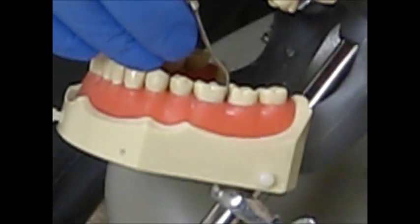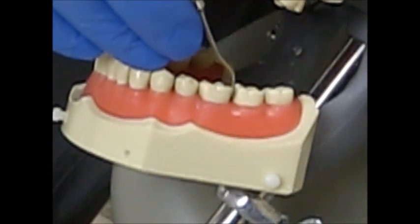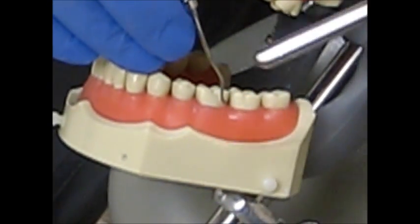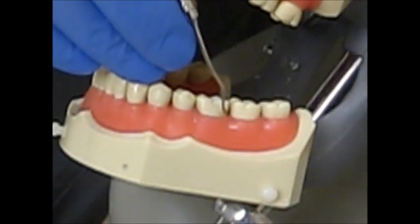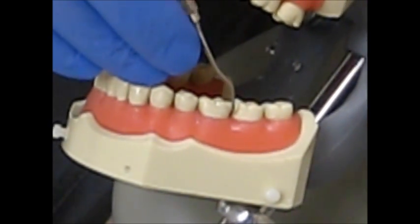You know you have the correct working end when the terminal shank is parallel to the distal surface and the last bend in the shank is away from the tooth going distally.